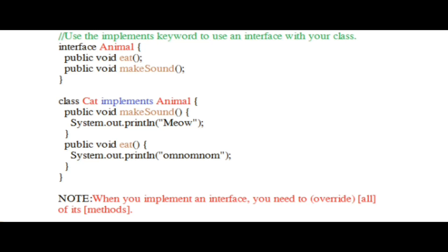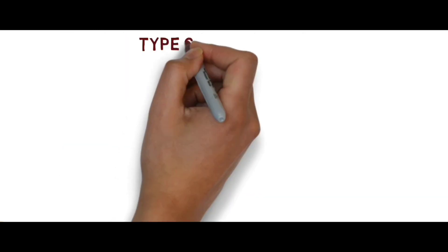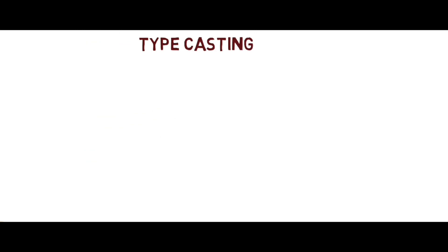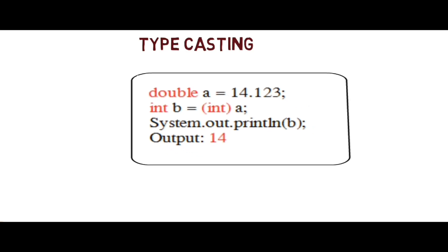The next topic is typecasting. Assigning a value of one type of variable to another type is known as typecasting. As you can see in this example, here we have typecast double to int - there is a loss of precision.